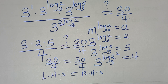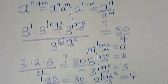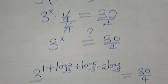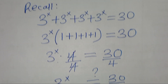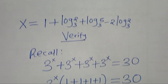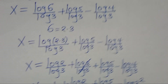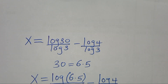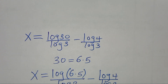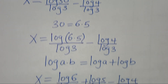This implies that the value of x, which is 1 plus log₃2 plus log₃5 minus 2 log₃2, satisfies the equation. Kindly like this video and subscribe.